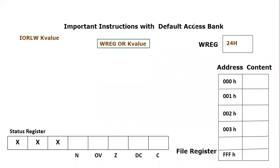In this video tutorial, we are going to learn a new instruction of the PIC microcontroller, and that instruction is IORLW, which stands for inclusive OR operation between a literal value and the working register. This instruction basically performs an OR operation between the working register and the immediate value provided inside the instruction. The K value is also known as a literal value or immediate value.